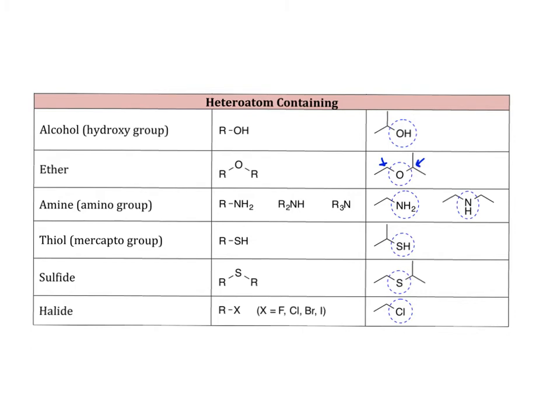If you have a nitrogen-containing group, it can contain hydrogens or carbons, a mixture. Those are called amines.